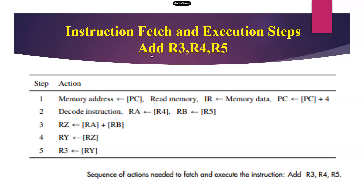So, for the ADD R3, R4, R5 instruction, this is the way to fetch and execute the instruction. It is an R format instruction, so compulsorily we use five steps, but the fourth step — memory access — is not required. The data is temporarily transferred to one register and finally transferred to R3.